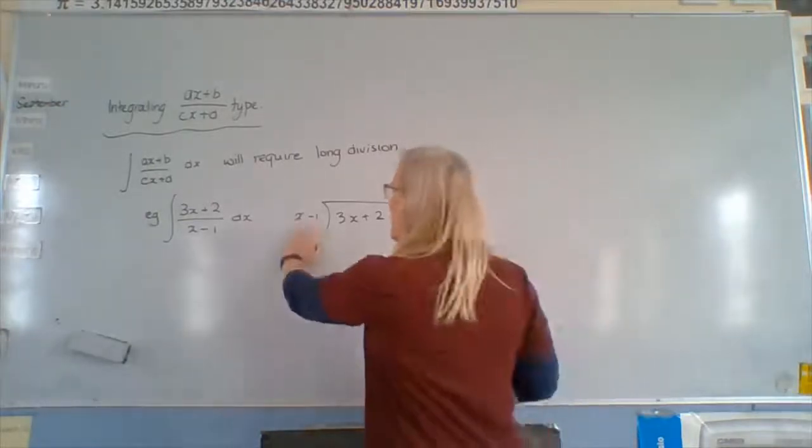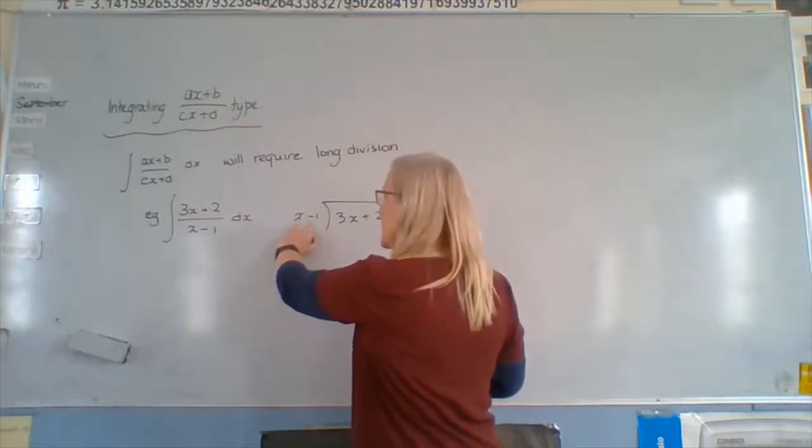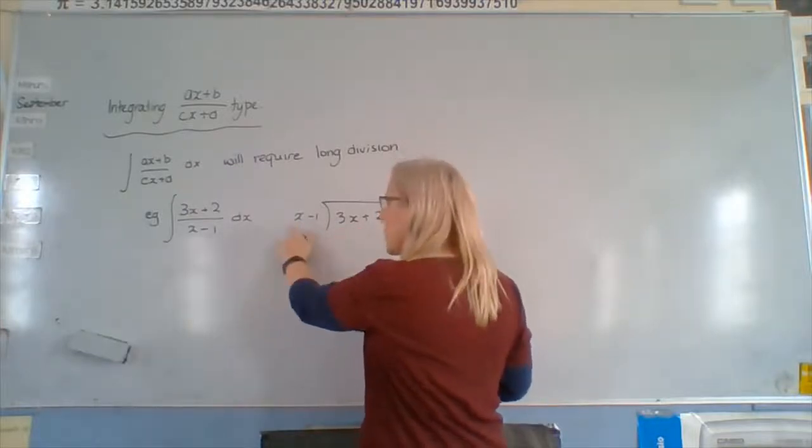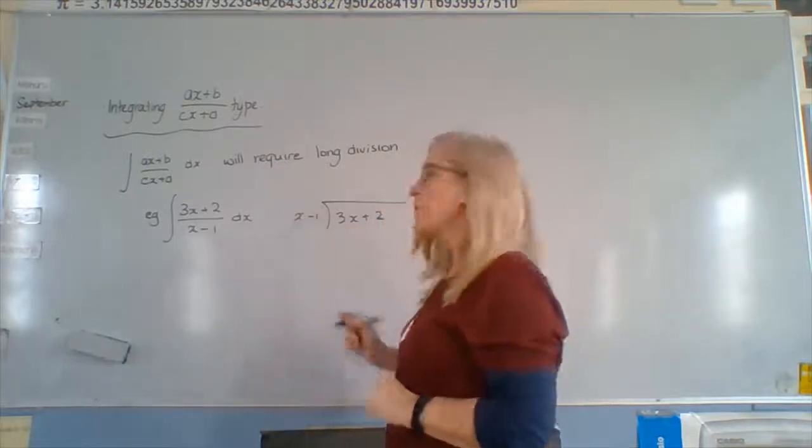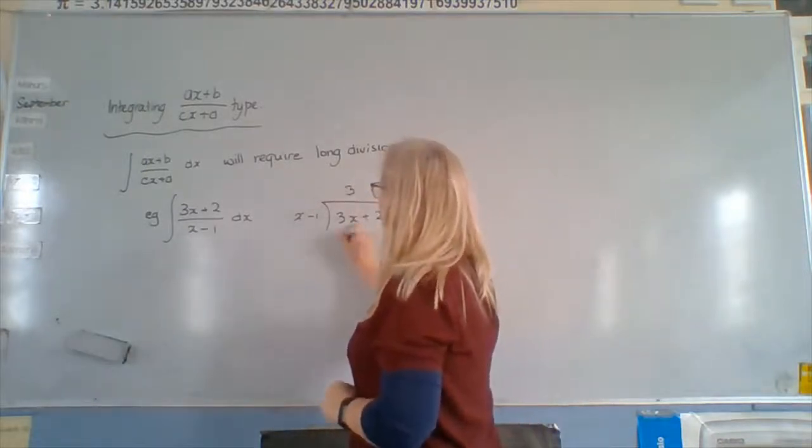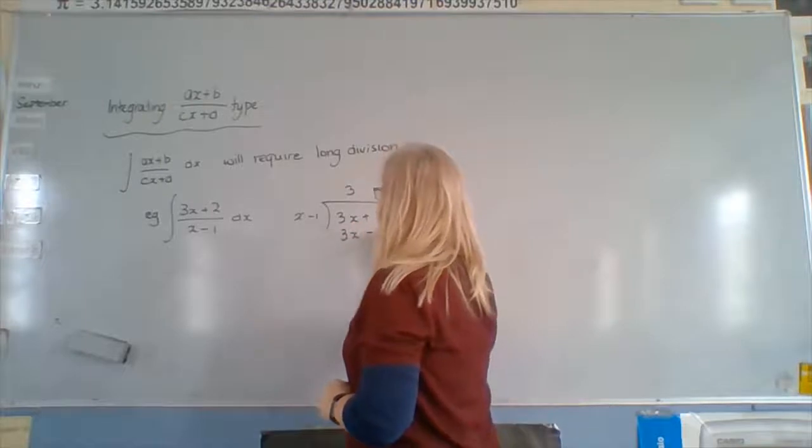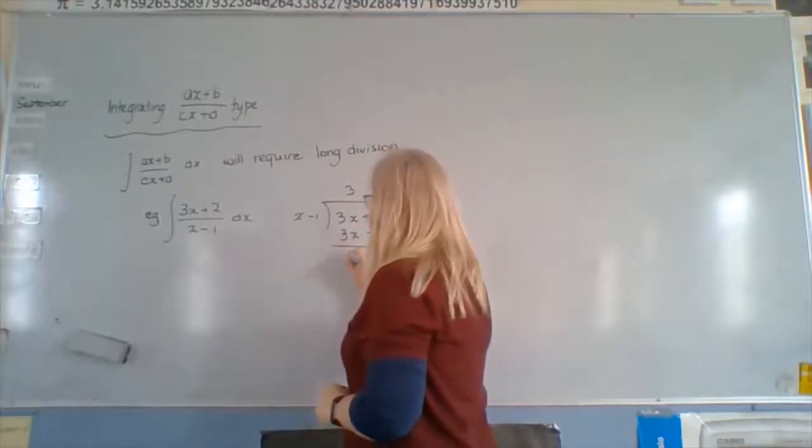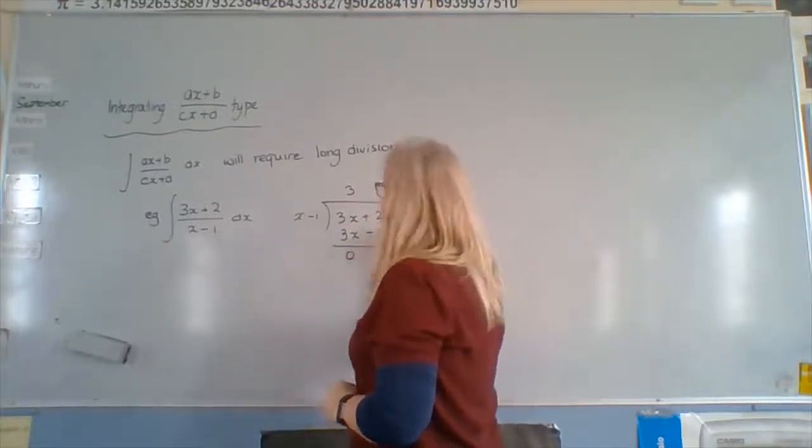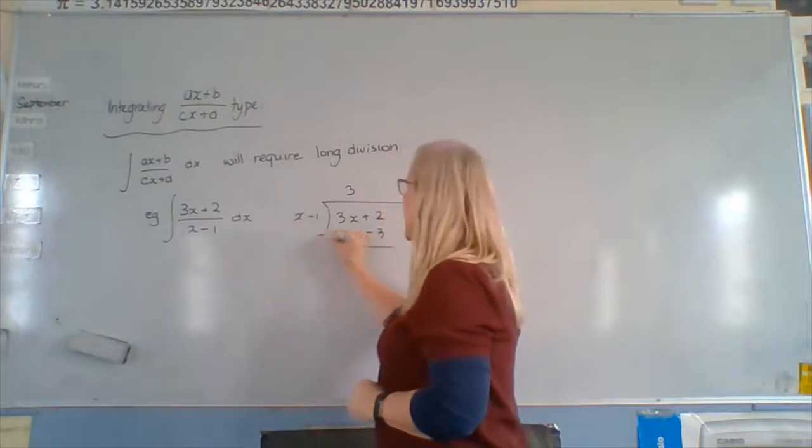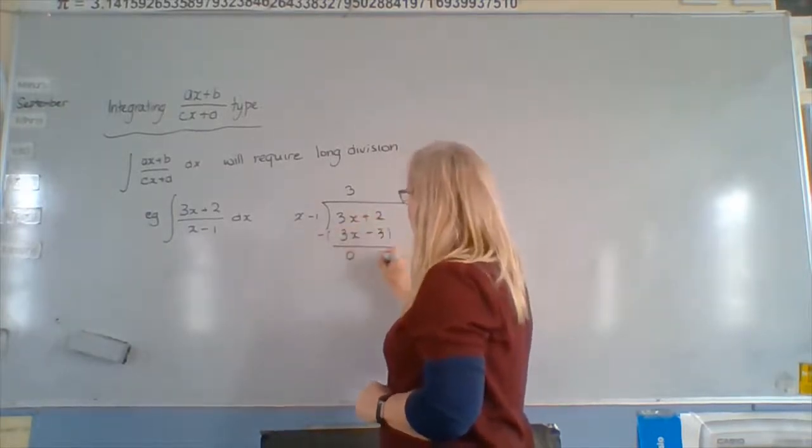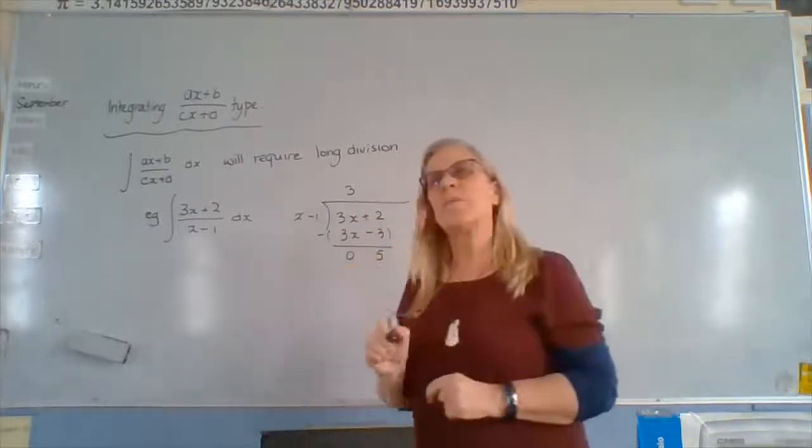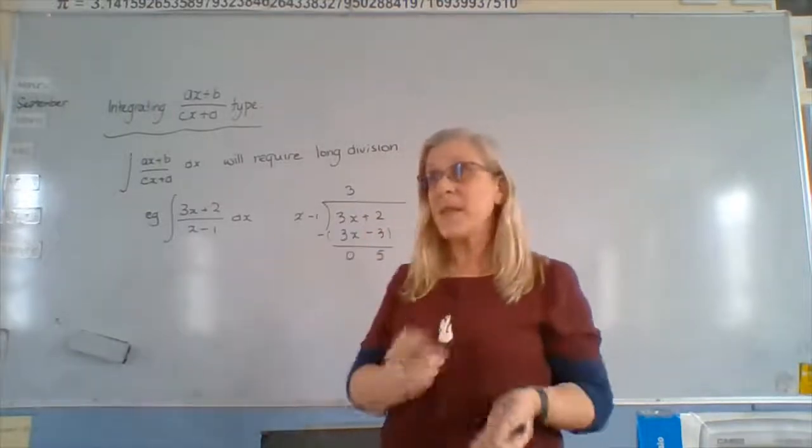We want to think, what can we do to remove that 3x? What will we multiply this by to remove that 3x? 3. So we stick a 3 at the top and we get 3x minus 3. And we subtract, and then we minus this. So we get that go away. 2 minus minus means 5. So we've got a remainder of 5.